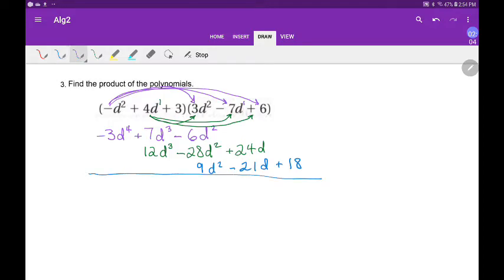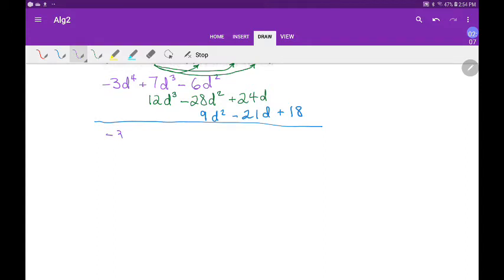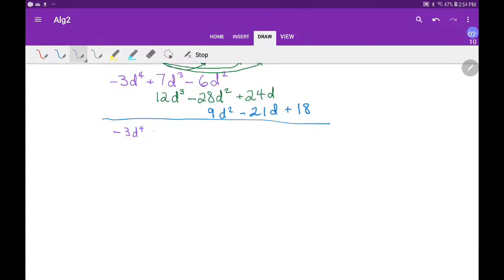My answer is, when I add these up: negative 3d to the 4th. They're both positive, so 19d to the 3rd. For the d squared terms, there's three of them, and it is going to be negative. I'd get negative 34, and then I combine the negative 34 with the positive 9, and I get negative 25d squared. Positive 24 and negative 21—the positive wins by 3—so plus 3d, and plus 18. There's my answer.